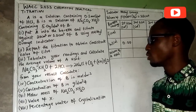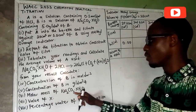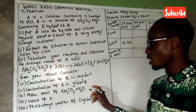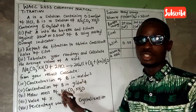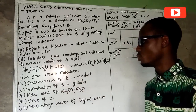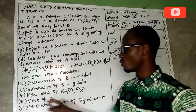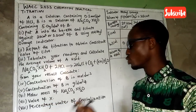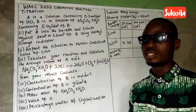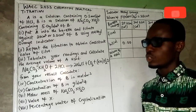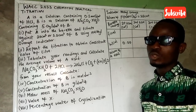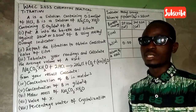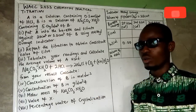We also determine the molar mass of Na₂CO₃·xH₂O. After determining the molar mass of the hydrated salt, it will be easier for us to know the value of x, and then determine the percentage water of crystallization in the salt. Now I'm going to bring the camera close to the practical and show how it is done.